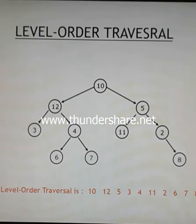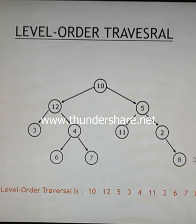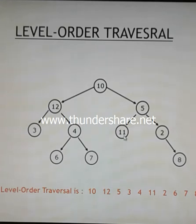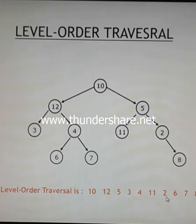The last scheme is level-order traversal. In this, we visit elements level by level. Node 10 is on the first level; 12 and 5 are on the second level; 3, 4, 11, and 2 are on the third level; and 6, 7, 8 are on the next level. So the level-order traversal sequence is: 10, 12, 5, 3, 4, 11, 2, 6, 7, 8. This is all about tree traversal.